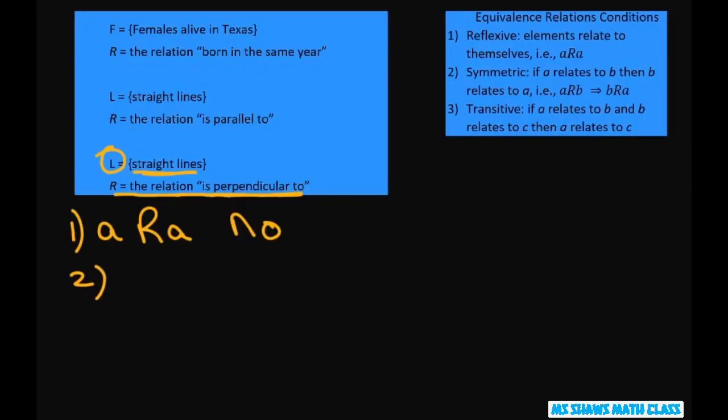So it's also not transitive. If A is parallel to B and B is parallel to C, then A is parallel to C. All right, you could draw a picture of that.